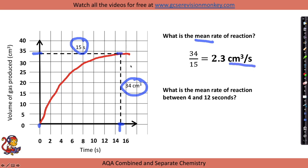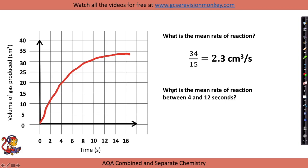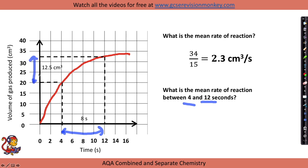We always do y divided by x in our calculations, and the units come from reading the graph axes — centimetres cubed divided by seconds. You may also be asked for the mean rate of reaction between two specific time points, for example between 4 and 12 seconds. Draw dotted lines up and across to the axes for each time point, read off the values — here 8 seconds and 12.5 cm³ — and calculate: 12.5 ÷ 8 = 1.6 cm³/s.